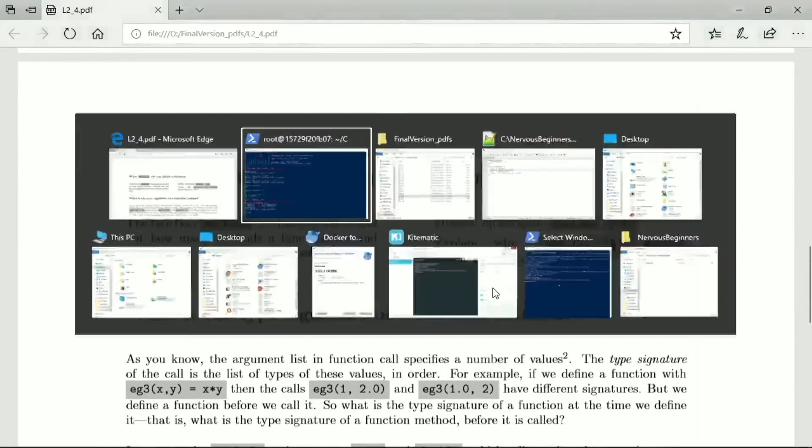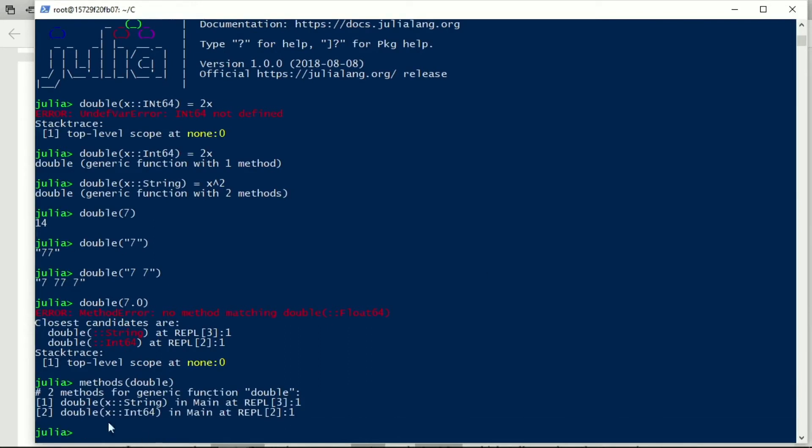All right, so there is the methods function. So we can ask, what did we call this? Double. And it says there are two methods. The one method takes x as a string, the other method takes x as int64.